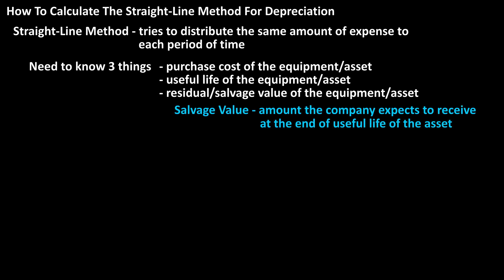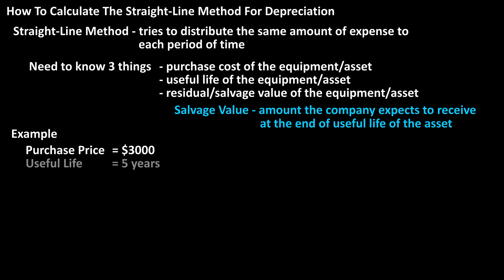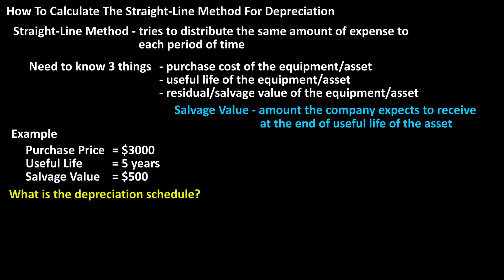Salvage value is the amount the company expects to receive at the end of the useful life of the equipment or asset. So let's say that a company purchases a piece of equipment for $3,000 and applies the straight-line method for depreciation. The useful life is five years and the salvage value is $500. What is the depreciation schedule?